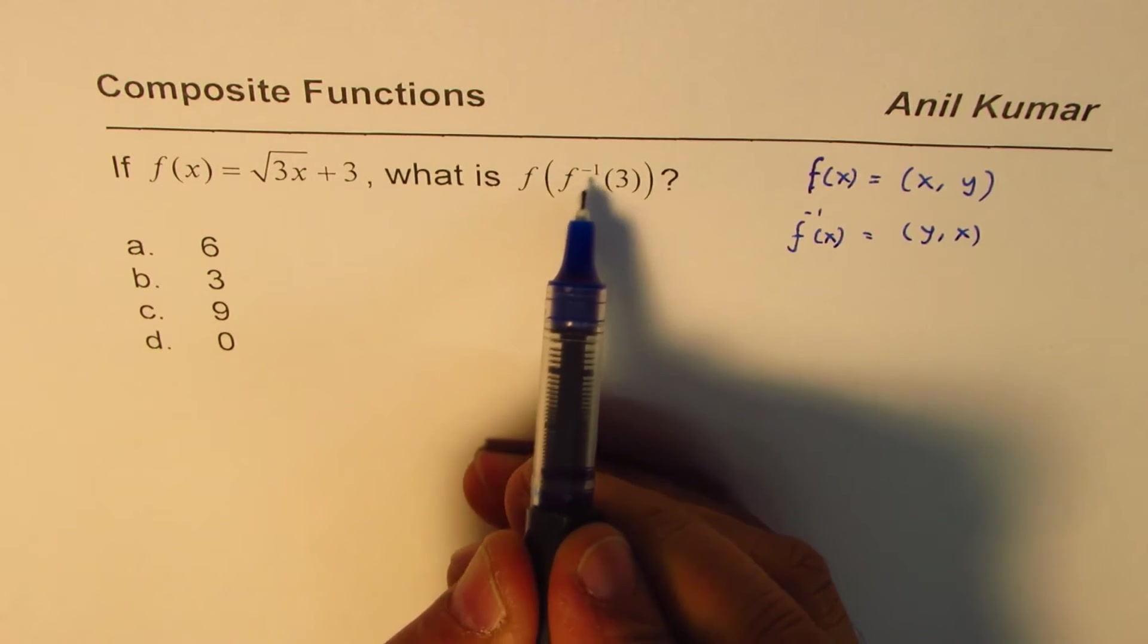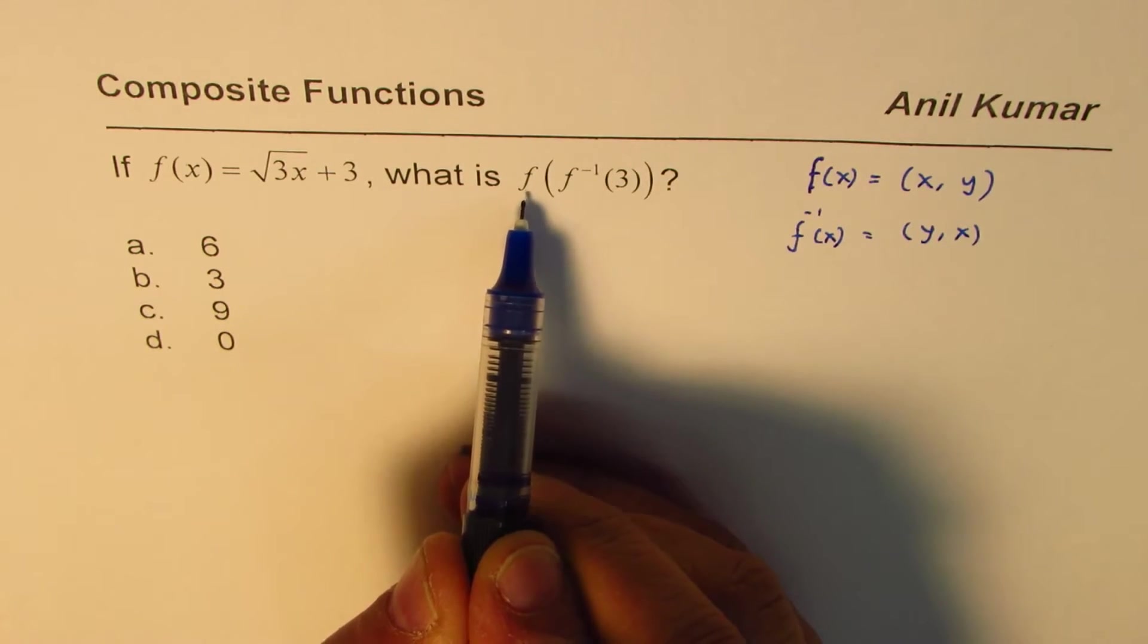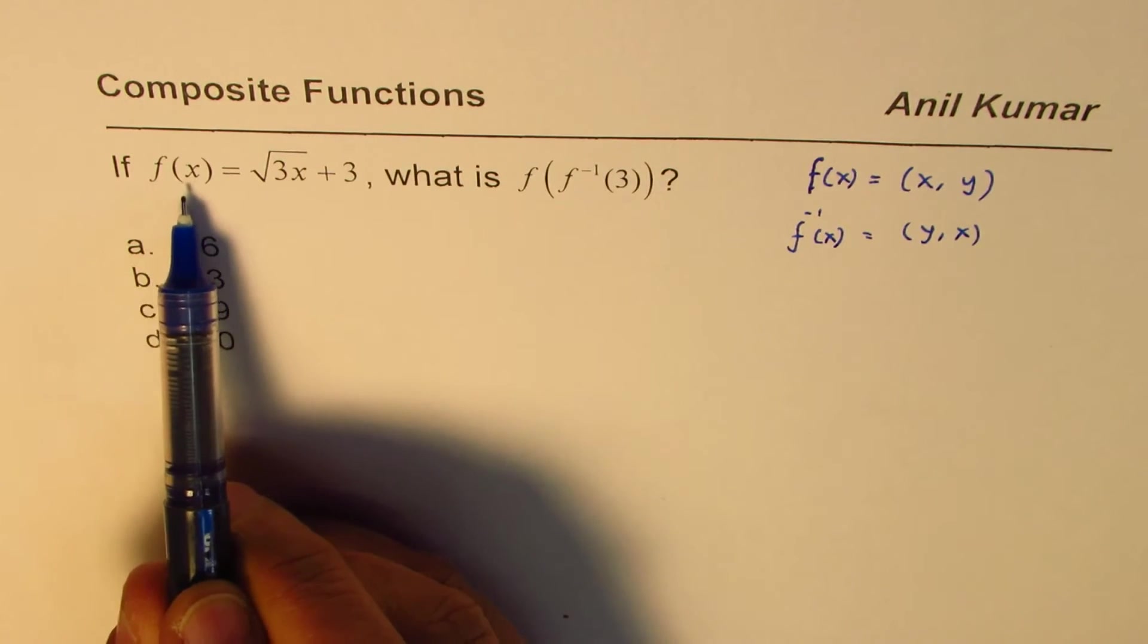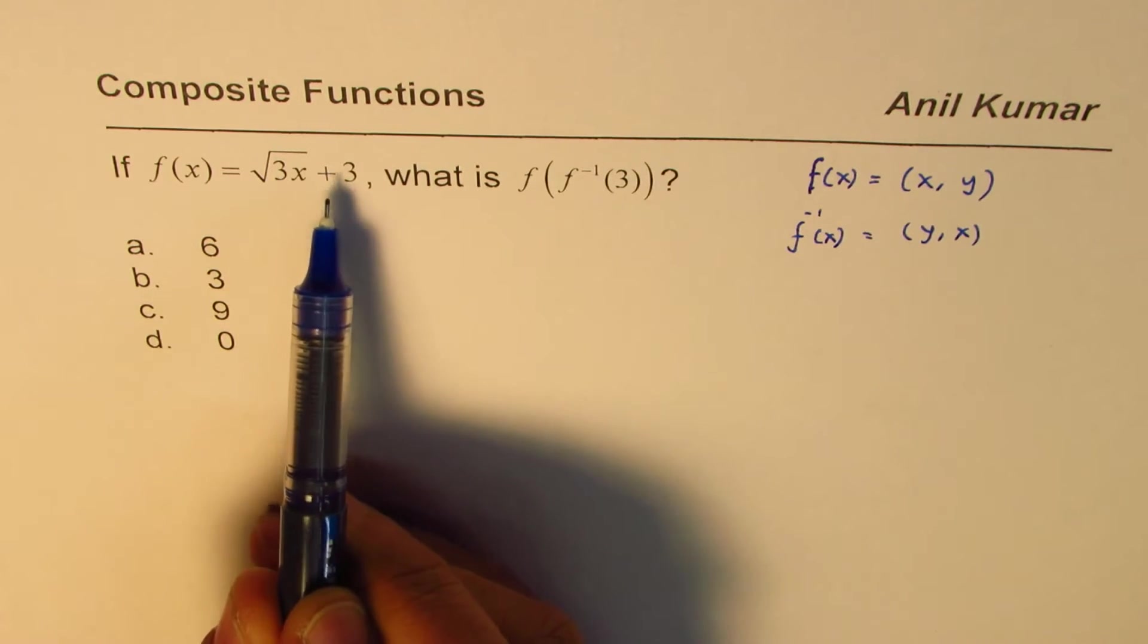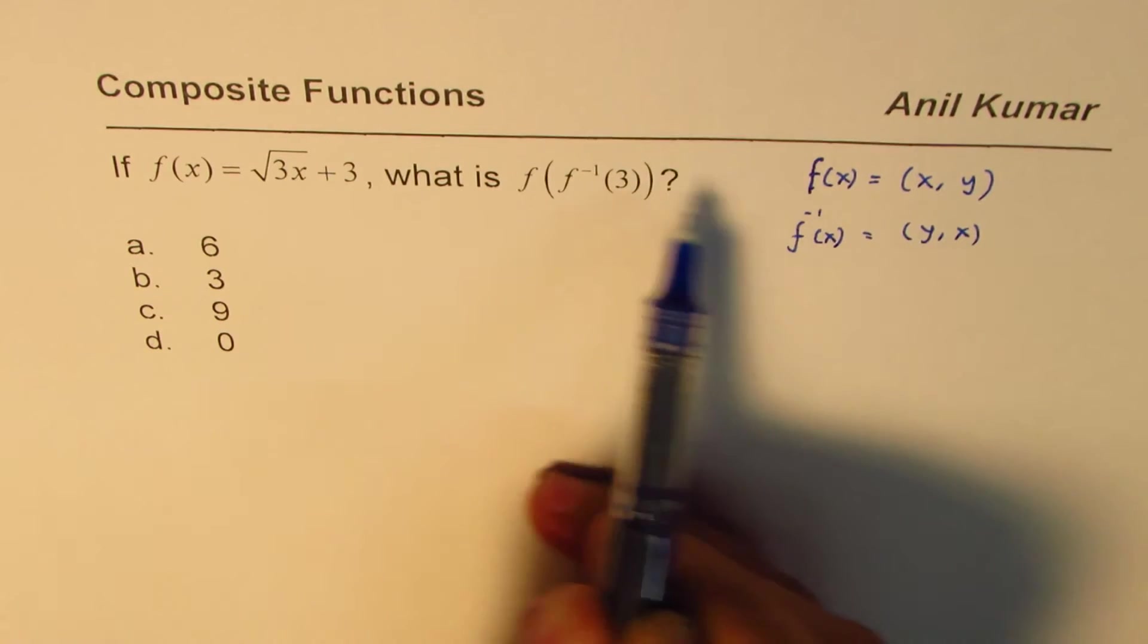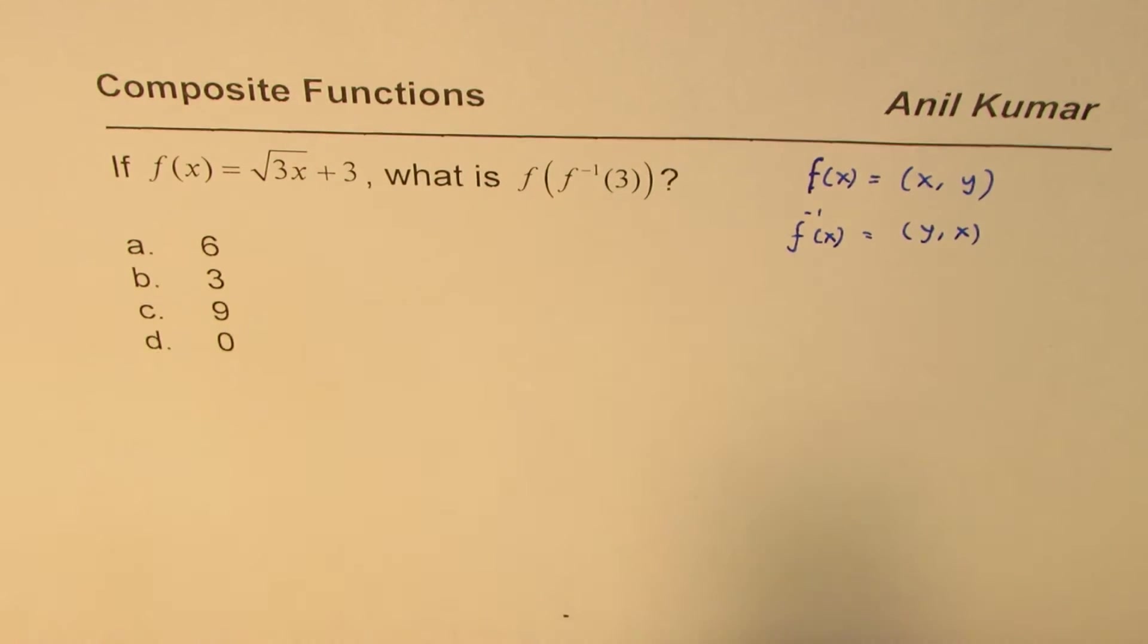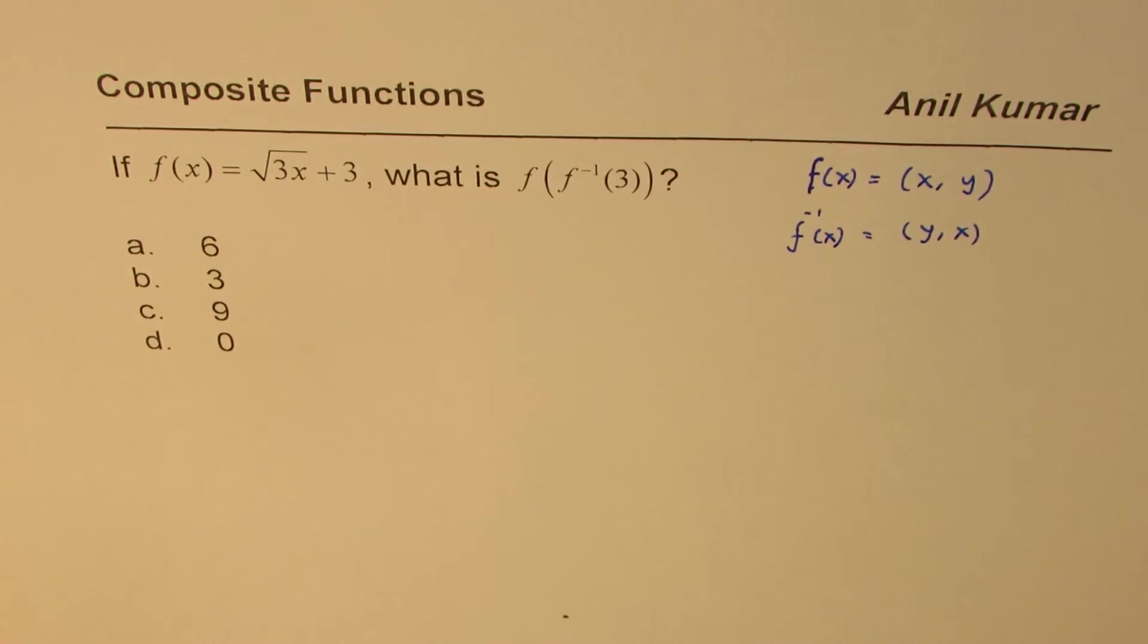We have f inverse of 3 as the inside function which should be solved first, and then the outside function f of that value. The function is given to us as f(x) equals square root of 3x plus 3. Since this 3 is actually the y value, if you have to find the inverse x, the method to solve this question is like this.